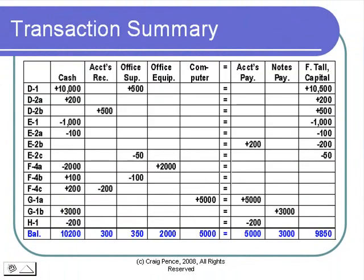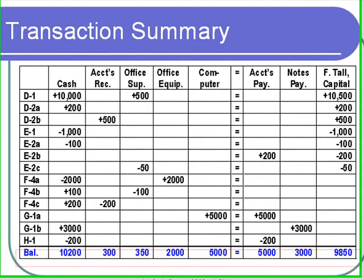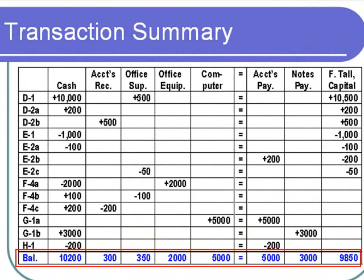Let's look at a summary of all the transactions that we've recorded for Fred. After recording them all, our ending balances are as follows: cash is $10,200; accounts receivable is $300; office supplies is $350; office equipment is $2,000; the computer account balance is $5,000; accounts payable is $5,000; notes payable is $3,000; and the ending owner equity is $9,850.